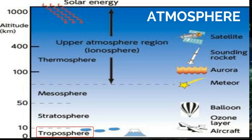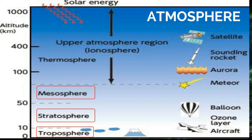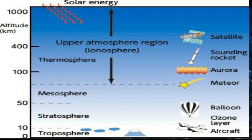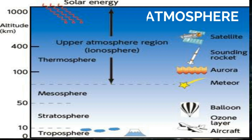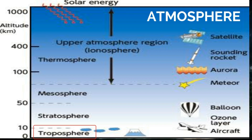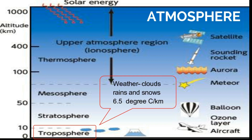These layers are the troposphere, stratosphere, mesosphere, thermosphere, and exosphere. The lowest part is the troposphere, also known as the boundary layer. It contains most of our weather — clouds, rain, and snow. In this part, the atmosphere gets colder as the distance above the Earth increases by about 6.5 degrees Celsius per kilometer. The top of the troposphere is called the tropopause.